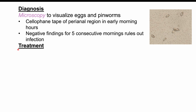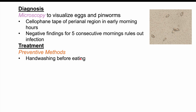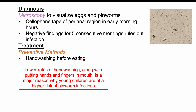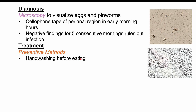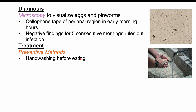Preventative methods include hand washing before eating. If eggs are present on hands from touching doorknobs, toilets, or other contaminated surfaces, touching the mouth or eating without hand washing introduces eggs into the gastrointestinal system. This is especially important in schools and daycares.